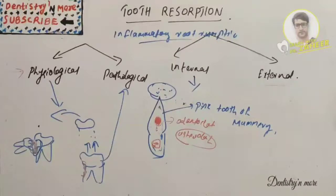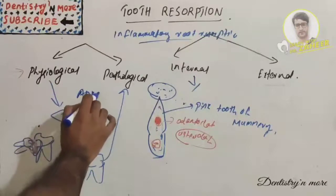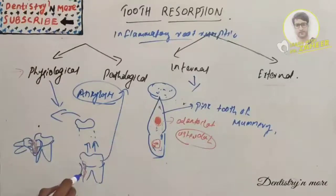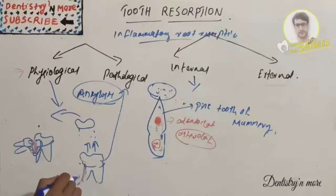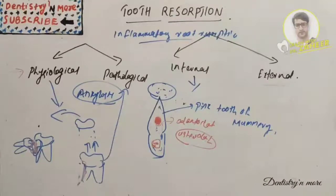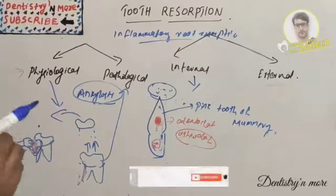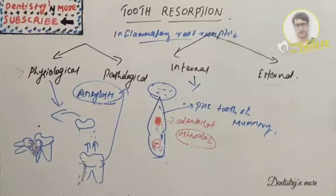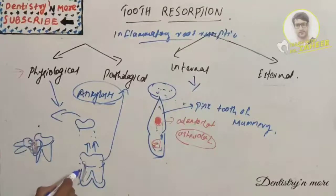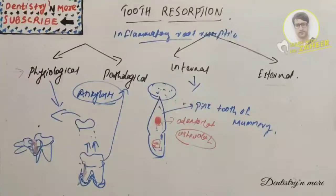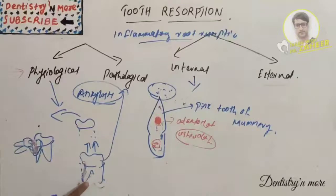The main complication of tooth resorption is ankylosis. The periodontal ligament is destroyed and there is direct fusion of the root and bone. It is due to excessive deposition of tissue during repair in the resting stages of resorption. Ankylosis can be diagnosed by lack of mobility of the tooth and a solid sound on percussion, compared to the dull cushioned sound in a normal tooth that has a periodontal ligament space.